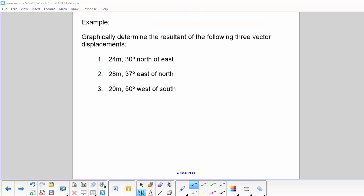For this example, we're going to determine the resultant of the following three vectors. 24 meters, 30 degrees north of east. 28 meters, 37 degrees east of north. And 20 meters, 50 degrees west of south.